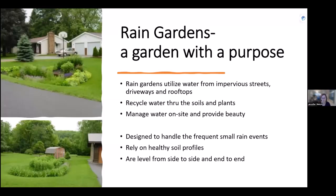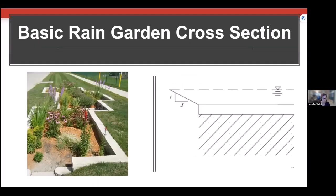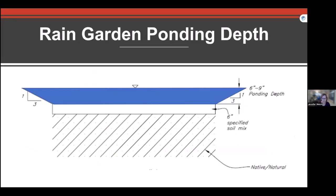Done right, people will drive down the street and not even realize it's a stormwater feature — it just looks like landscaping. Rain gardens are designed to handle frequent small rain events. In Iowa, about 90 percent of rains are less than an inch and a quarter, so those are the events we're sizing rain gardens for. They rely on healthy soil profiles so water can soak in.